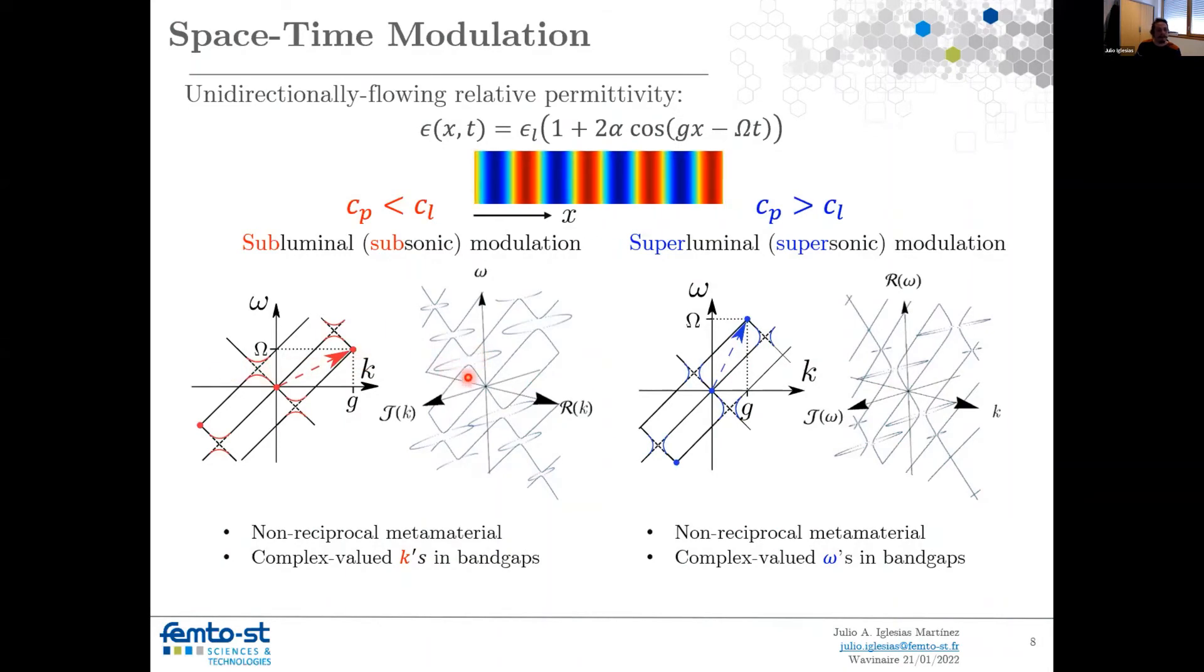And this is what we have as dispersion relationship. We retain a lot of properties from the space-only case. For example, the gaps that are open, when we are in it, we have complex values in k only. In the other case, when you have superluminal modulation, what we said is that the modulation speed is bigger than the wave in the media.